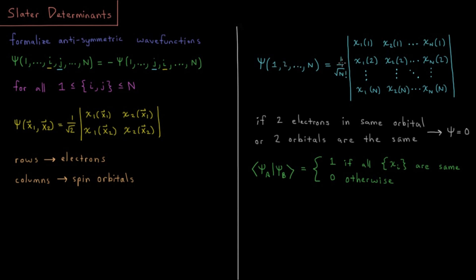We have the normalization constant 1 over square root of n factorial, n factorial being the number of permutations or the different ways you can arrange the labels 1, 2, all the way to n.